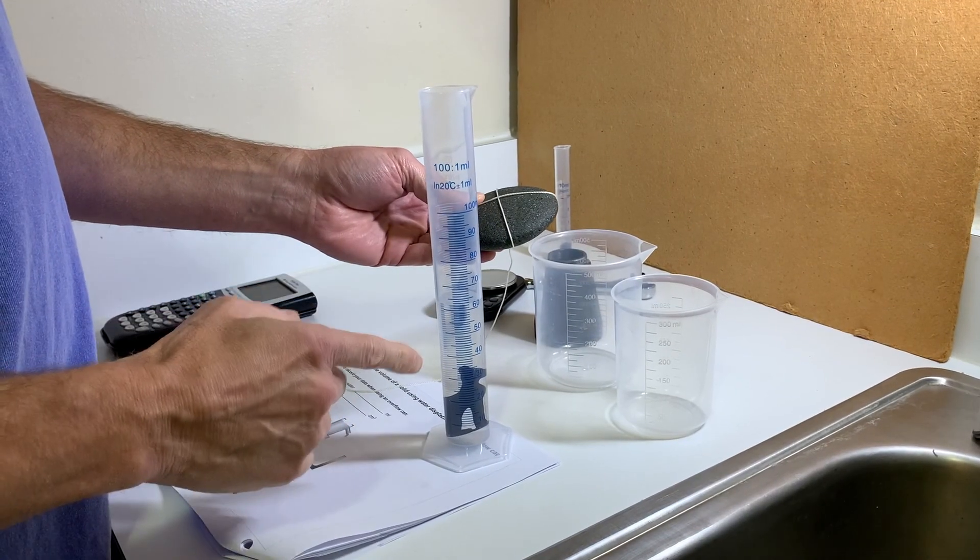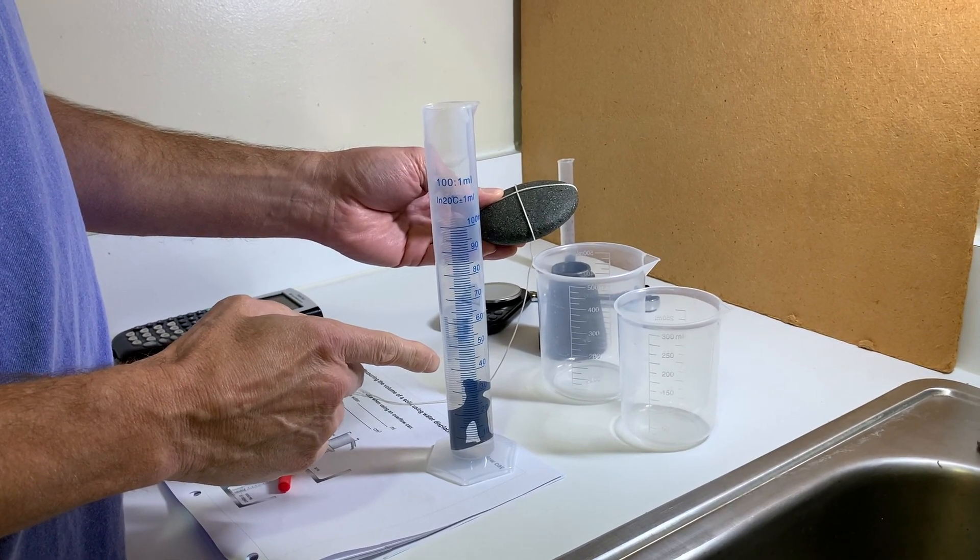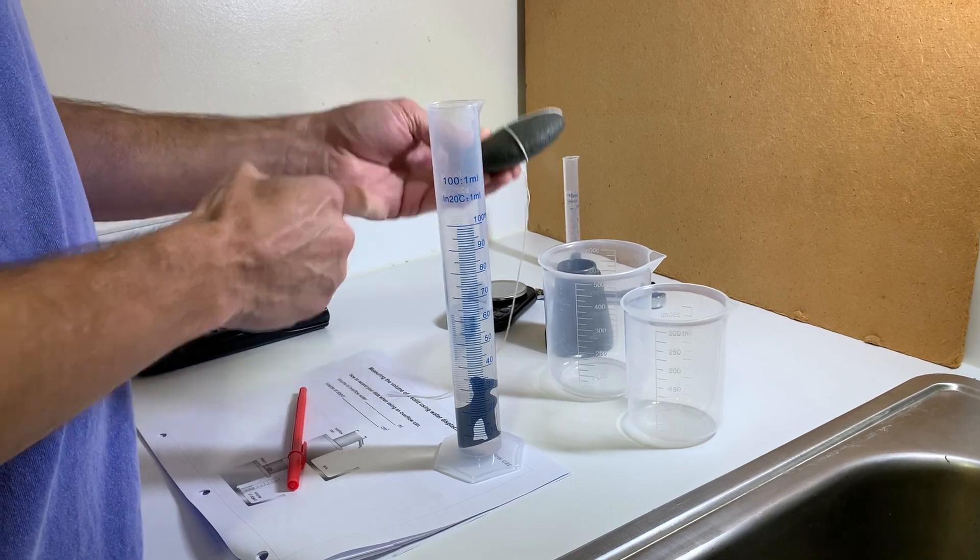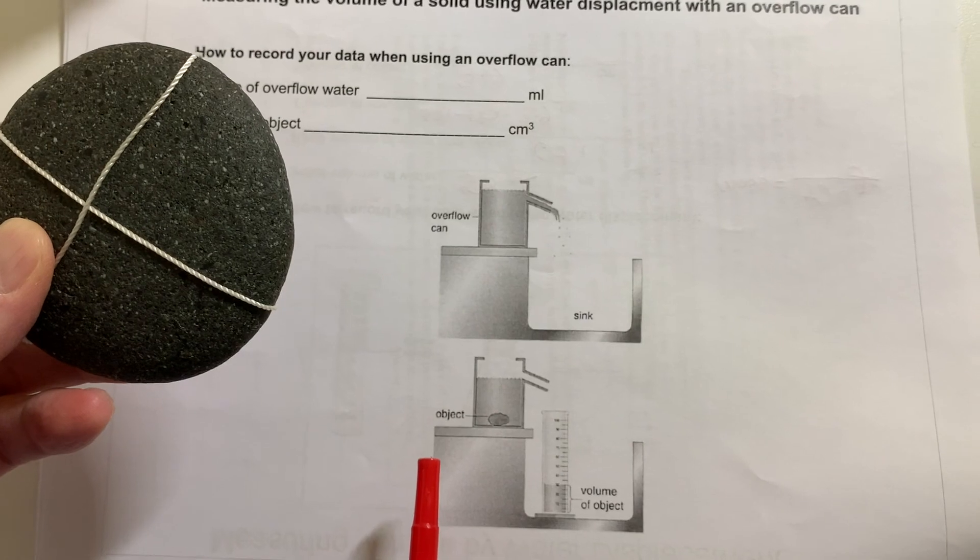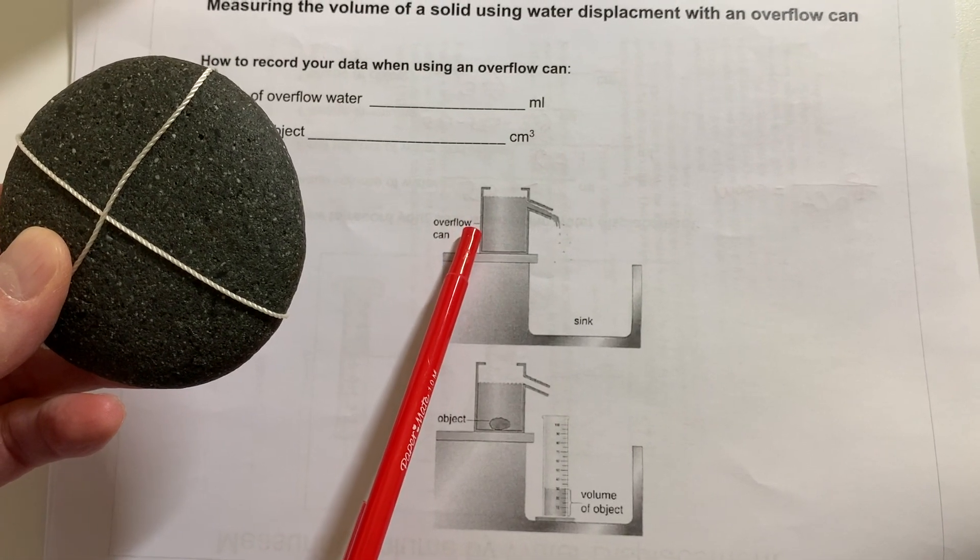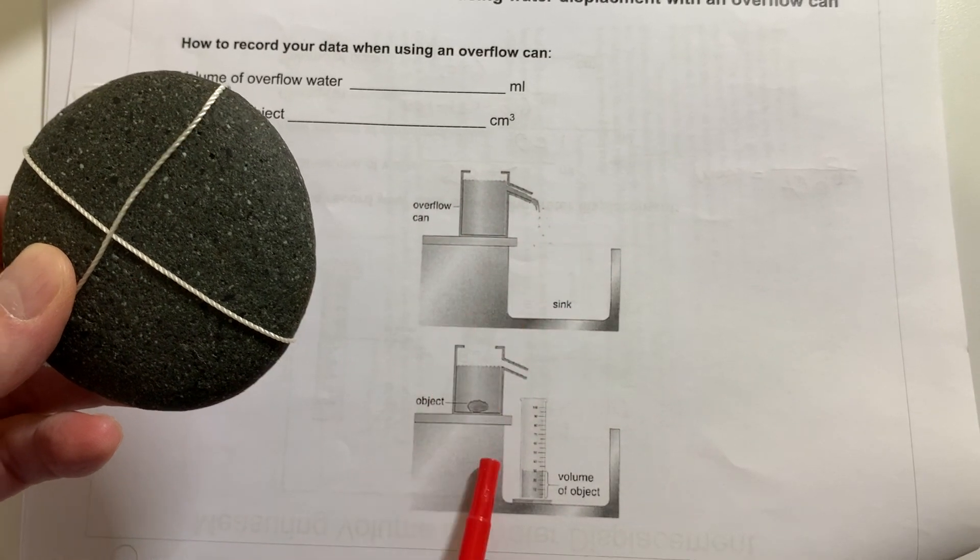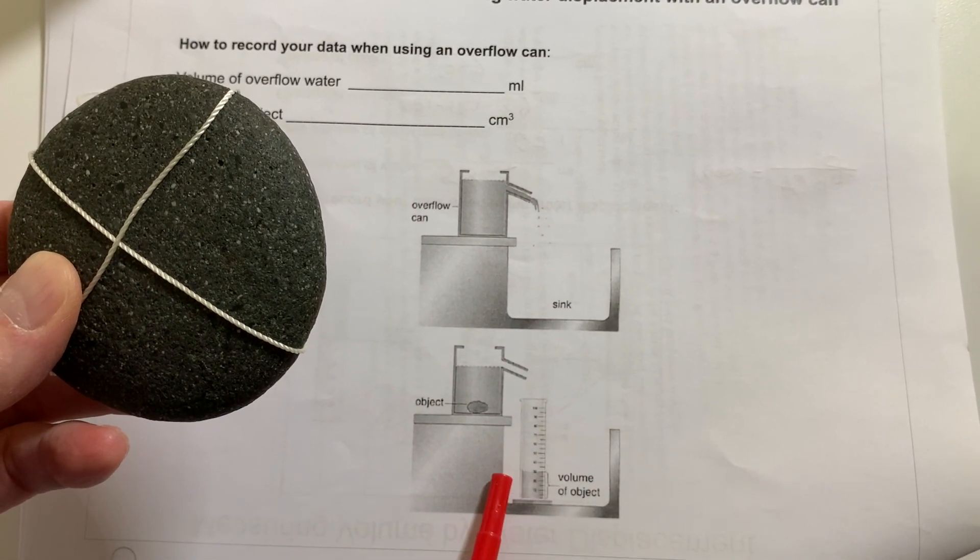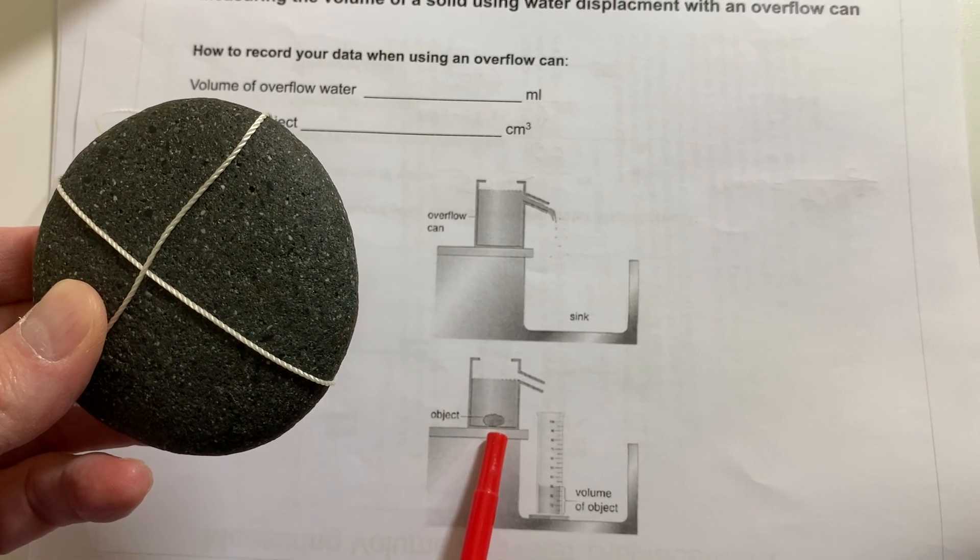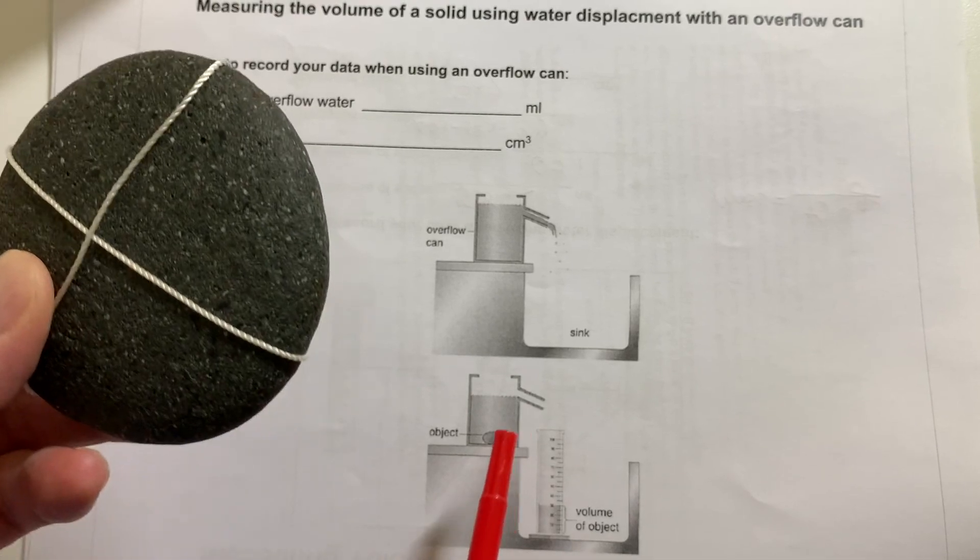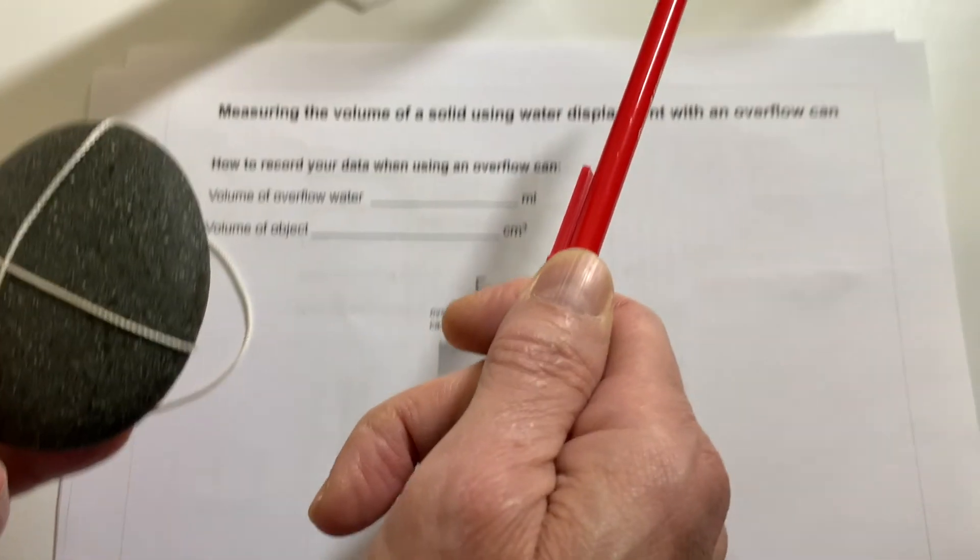Now, using a graduated cylinder is definitely a good way to measure the volume of a liquid. However, unfortunately, I can't do anything like that with this object. So I'm going to need to use a different method. In class, we would use one of these overflow cans where we would drop the object in and water would flow out. But of course, we would catch that water and the volume of the water that flows out is going to be equal to the volume of the object. But we don't have that available. So this time, we'll use the next best thing, which is over here, our beakers.